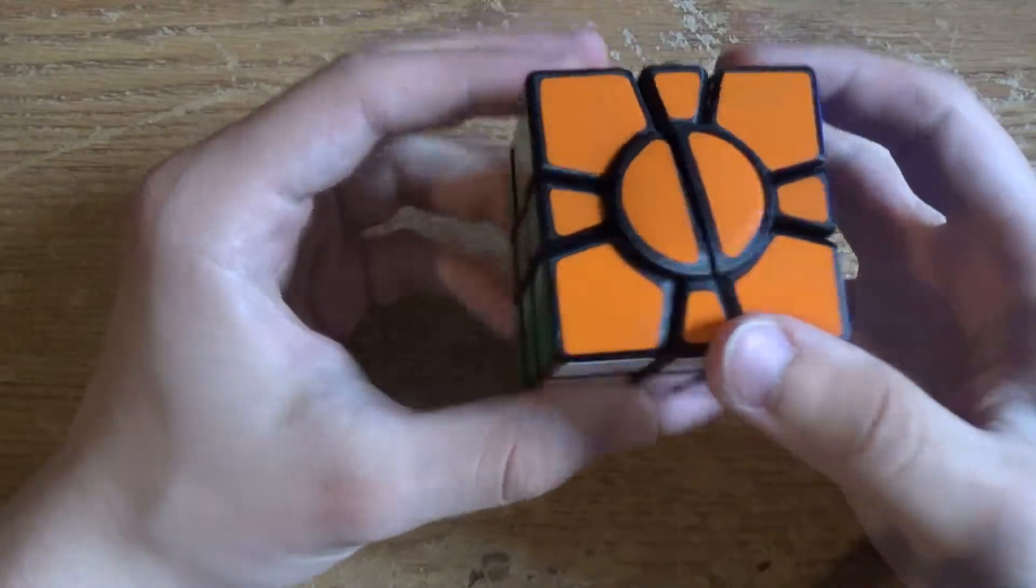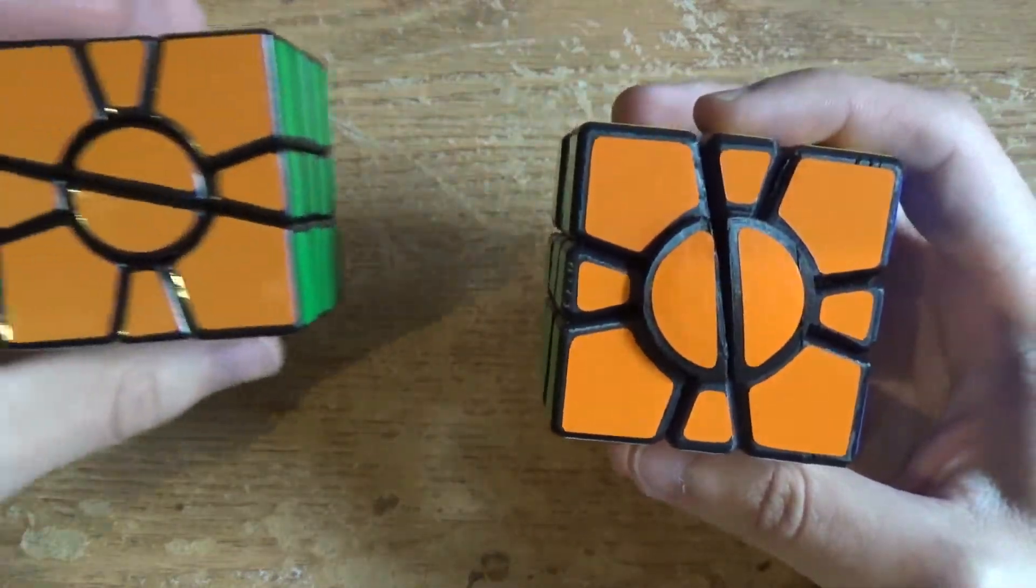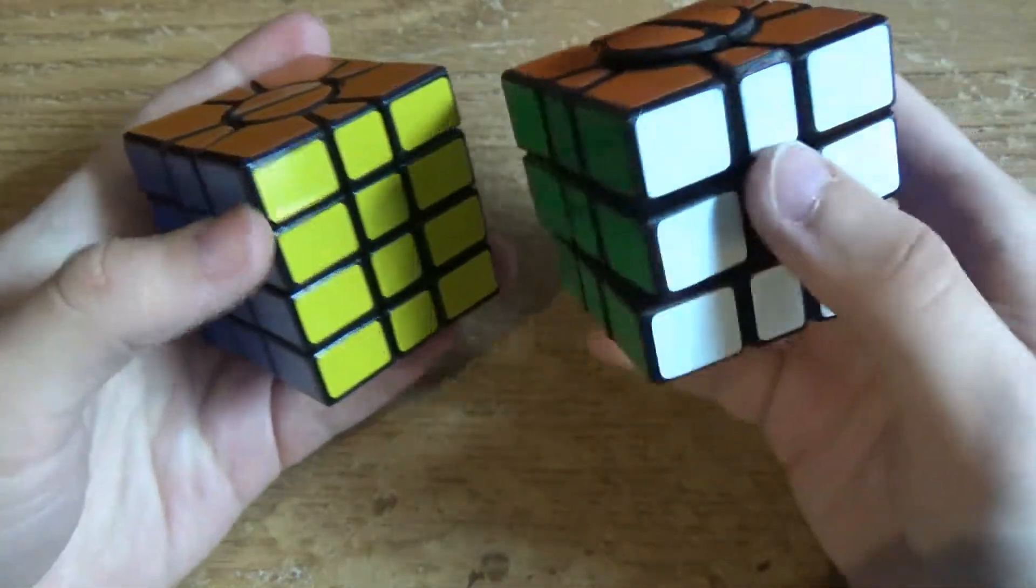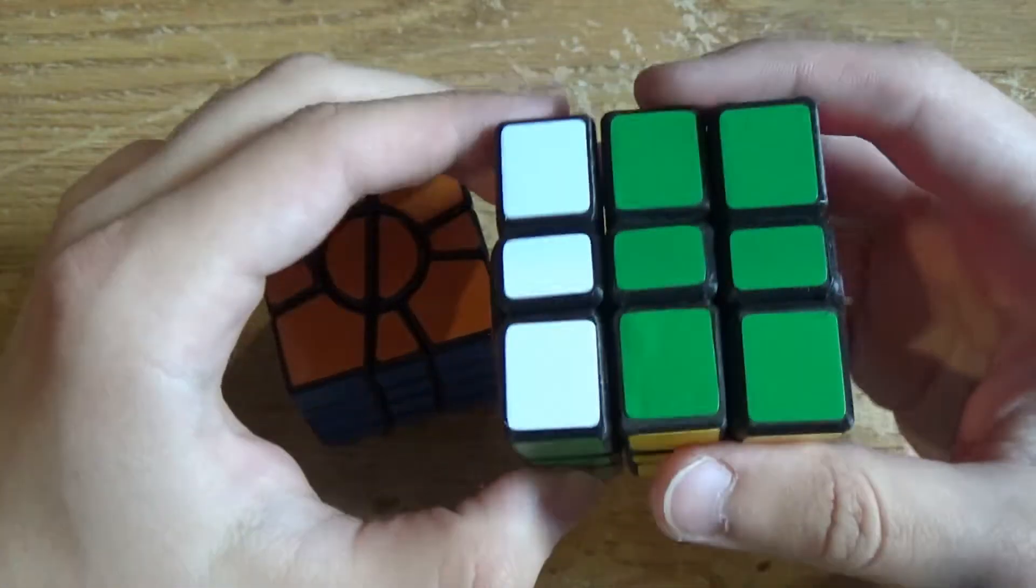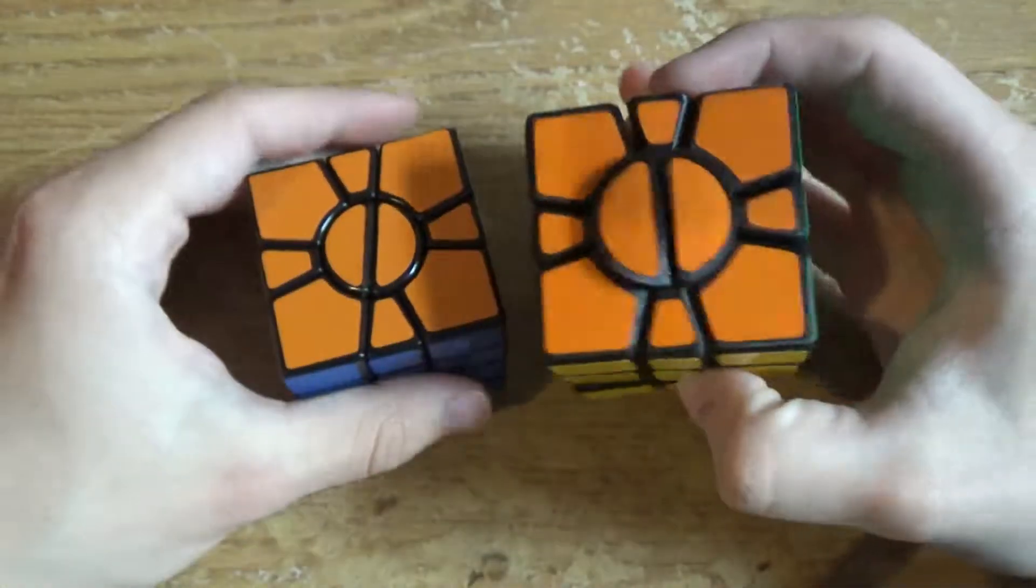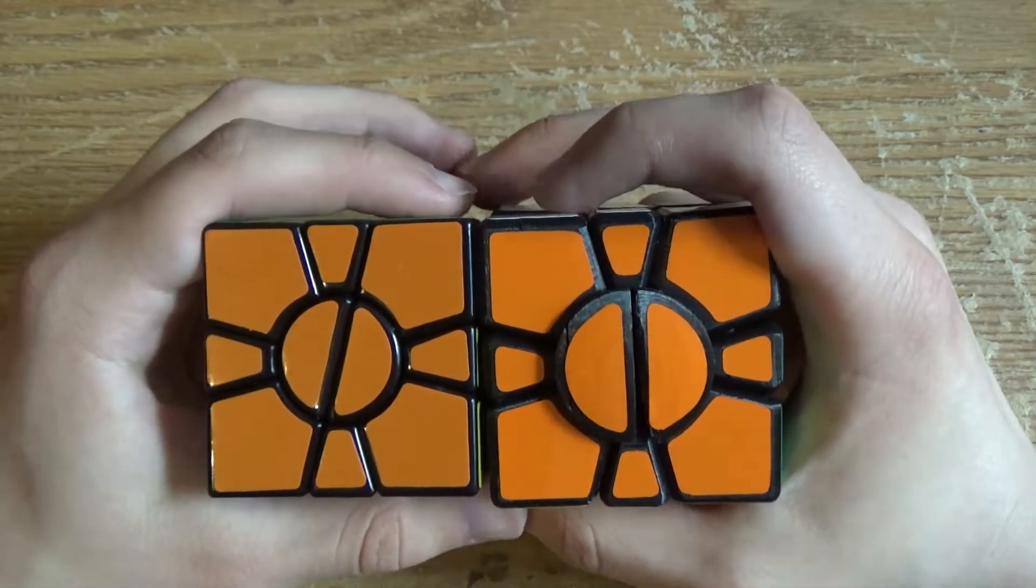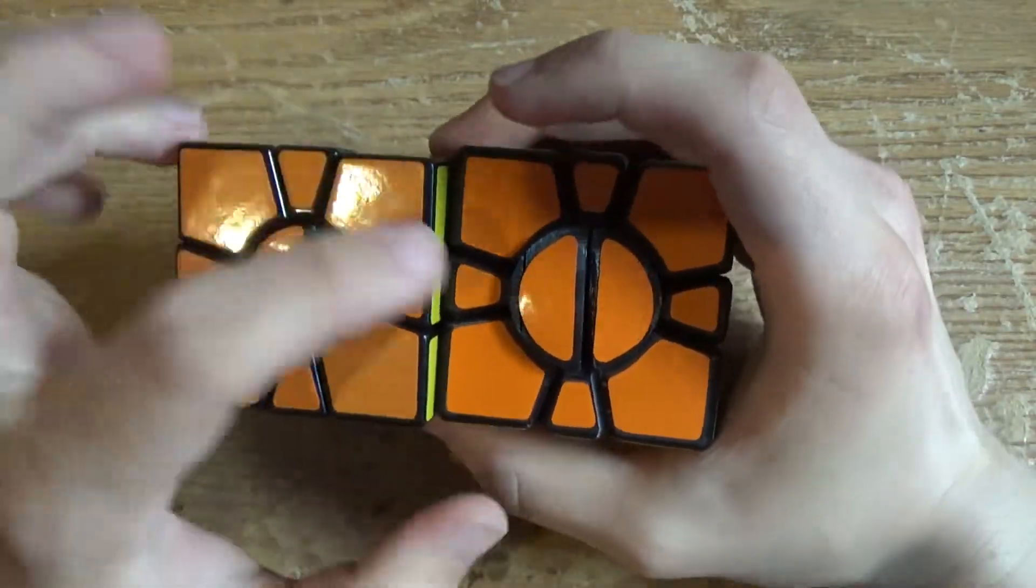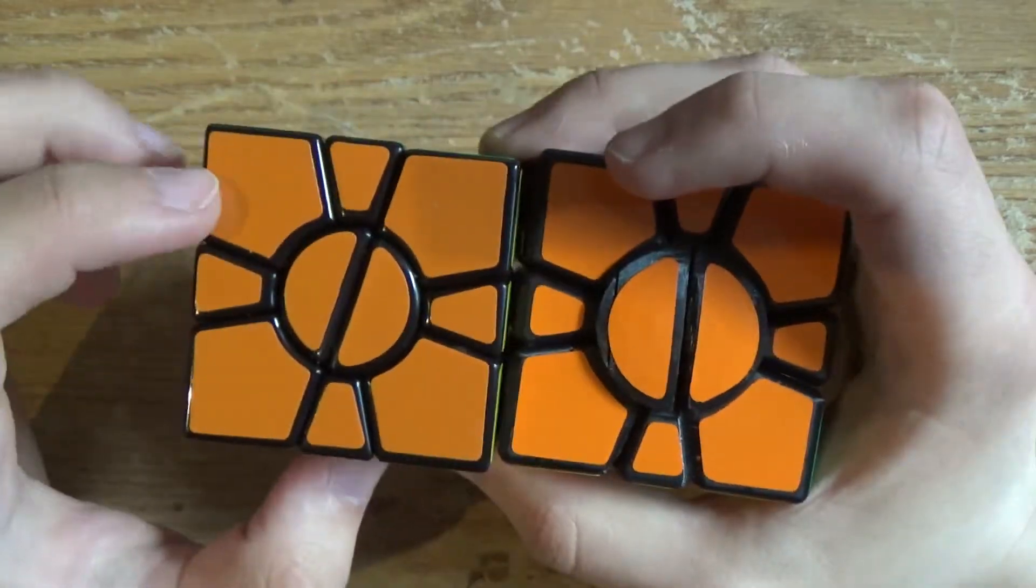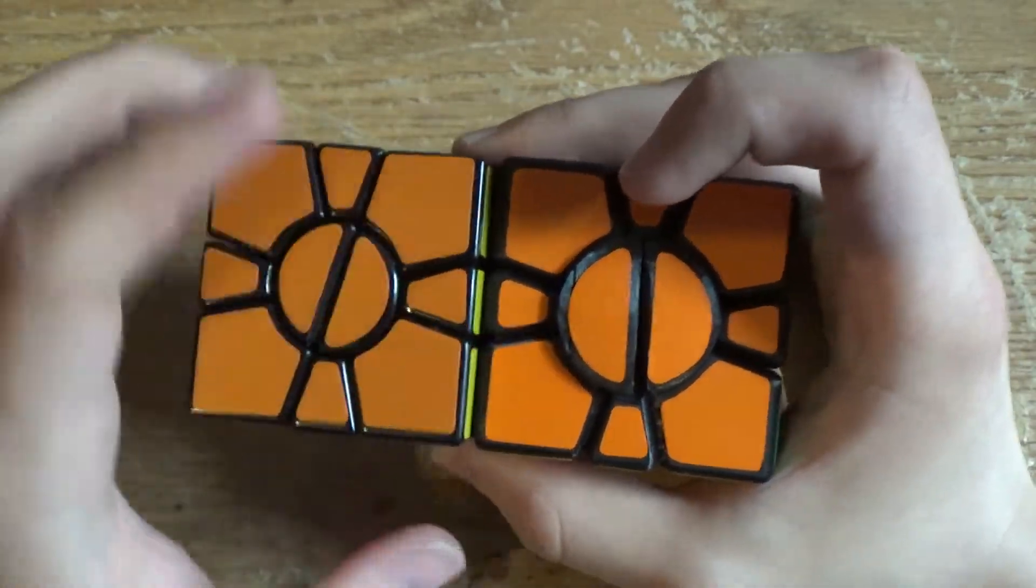Alright, so after stickering it, this is what it looks like. NK Cubed says that you can probably use the stickers from a normal super square one such as this one. And I mean, for these top faces and bottom faces, then absolutely. I mean, I didn't actually use stickers from this, but you can see that you can definitely use these on this.